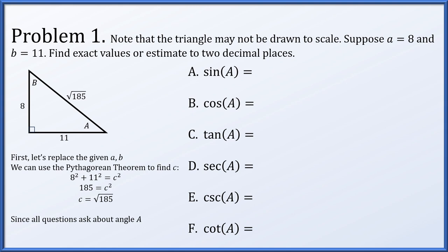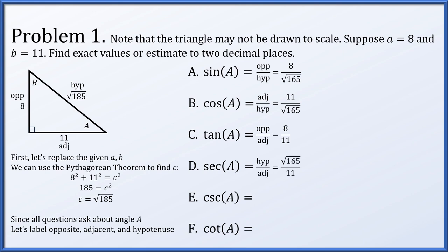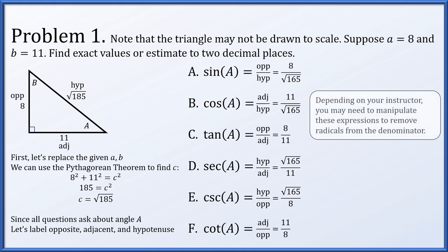All questions ask about angle A. Let's label what side is opposite, adjacent, and hypotenuse regarding angle A. So 8 is opposite of A, 11 is adjacent, and the square root of 185 is the hypotenuse. Now the sine of A is opposite over hypotenuse, or 8 over root 185. The cosine is adjacent over hypotenuse, 11 over root 185. Tangent is opposite over adjacent, or 8 over 11. Secant, cosecant, and cotangent are merely reciprocals of cosine, sine, and tangent respectively. So hypotenuse over adjacent, hypotenuse over opposite, adjacent over opposite.